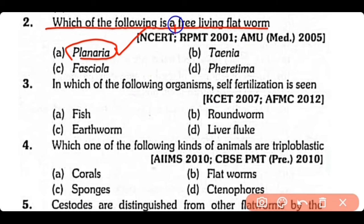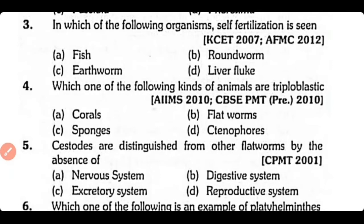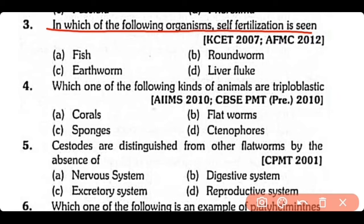Question no.3. In which of the following organisms is self-fertilization seen: fish, roundworm, earthworm, or liver fluke? The correct answer is option D. Liver fluke can undergo self-fertilization, but cross-fertilization is most commonly found.